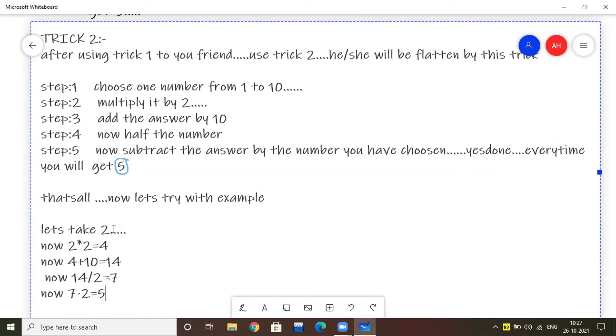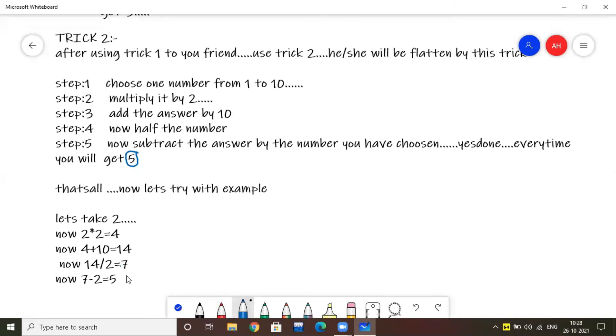So let's take the number as 2. Now 2 into 2 is 4. Now 4 plus 10 is 14. Now half it: 14 by 2 is 7. Now subtract the number which we have got, 7, by the number we have taken, that is 2. 7 minus 2 is 5. Always you will get 5.